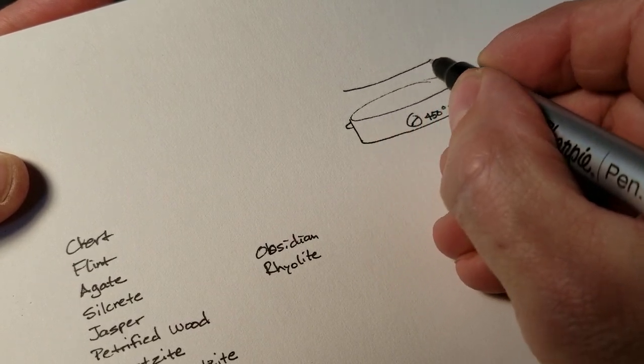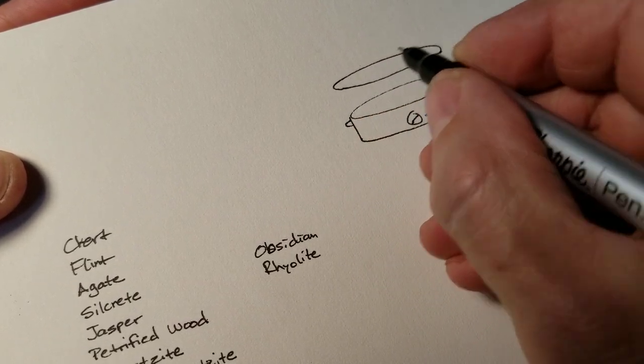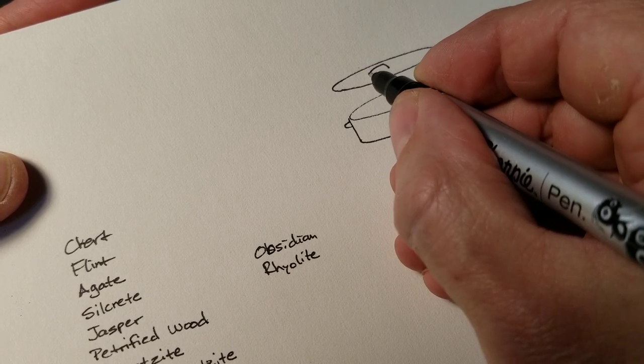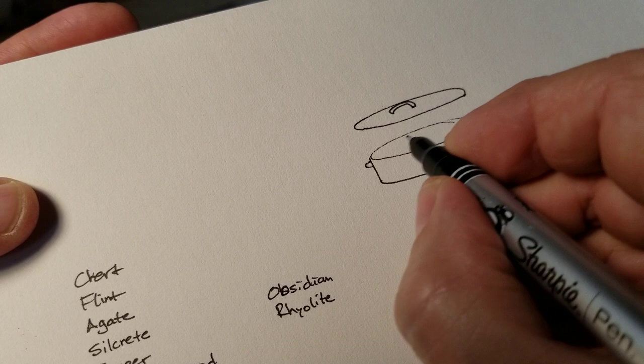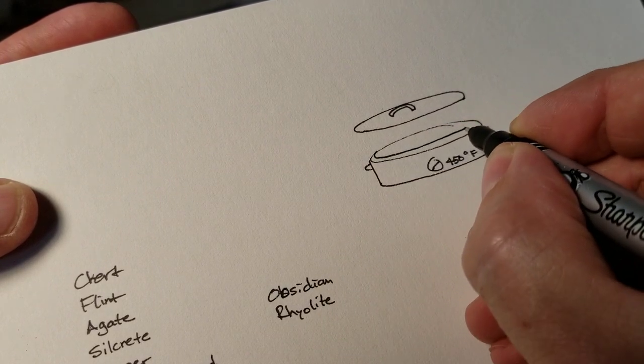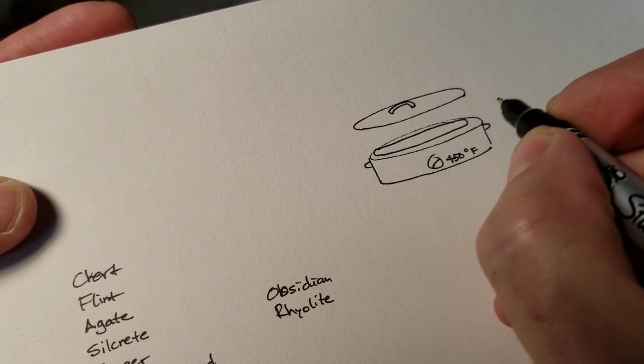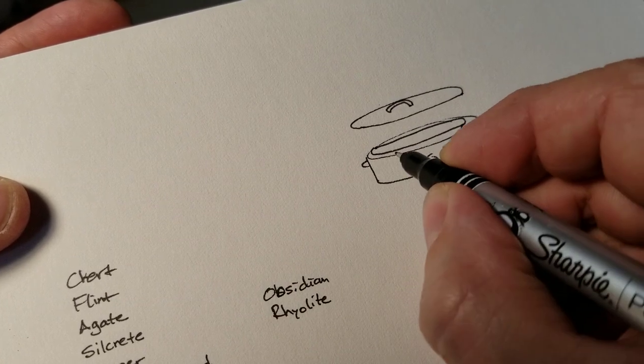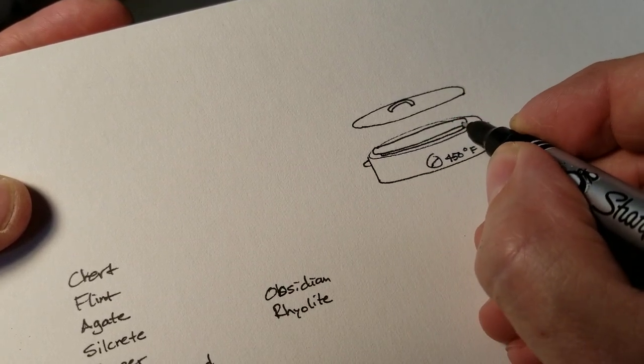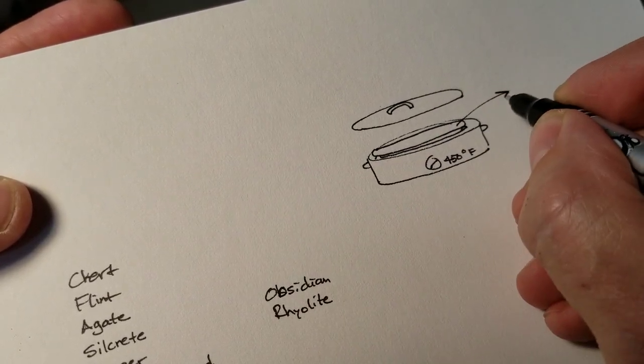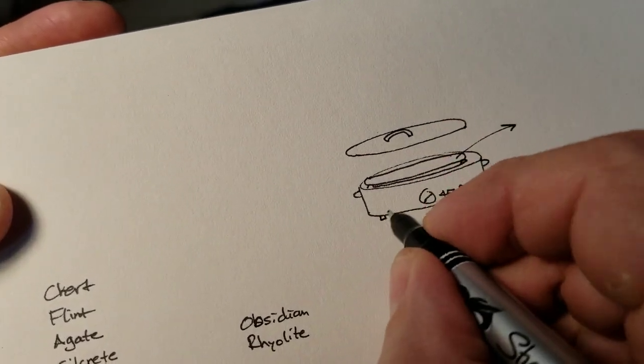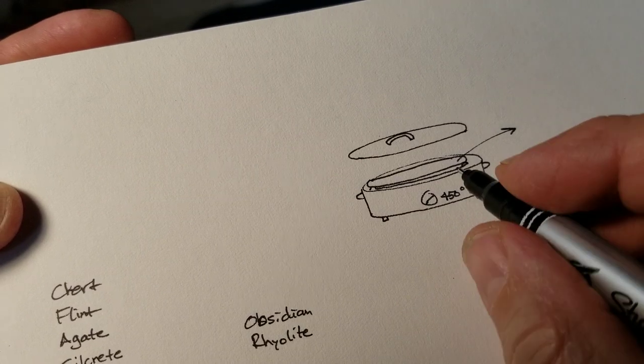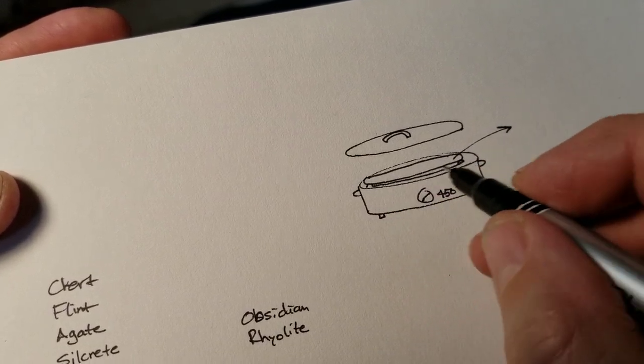And it has a lid. And it usually has a pan on the inside. What you want to do is remove that pan. It's a ceramic pan. Take that pan out. It gives you more room on the inside.